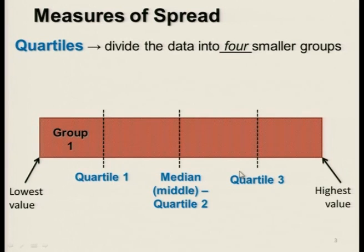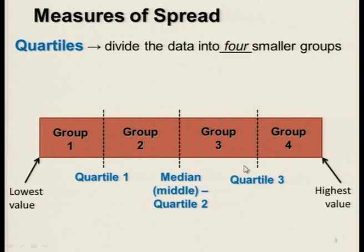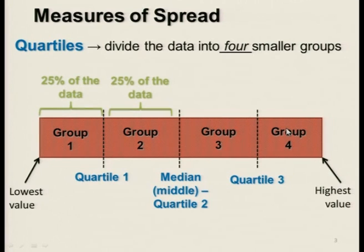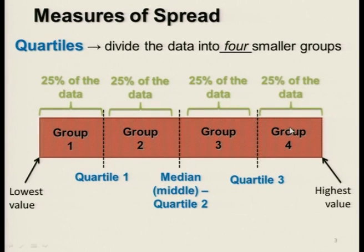That gives us four groups of data: first, second, third and fourth. What is very important is that you must remember that a quarter of the data will be in group 1, a quarter in group 2, a quarter in group 3, and a quarter in group 4. Instead of saying a quarter, we can of course say 25% of the data.